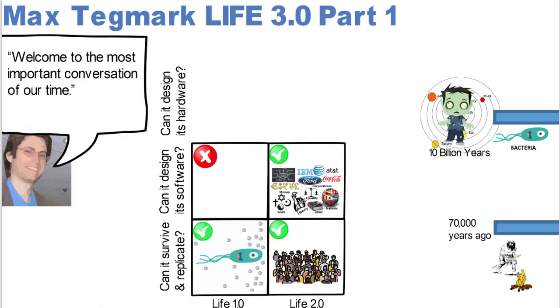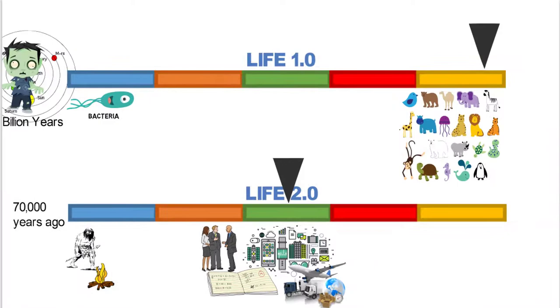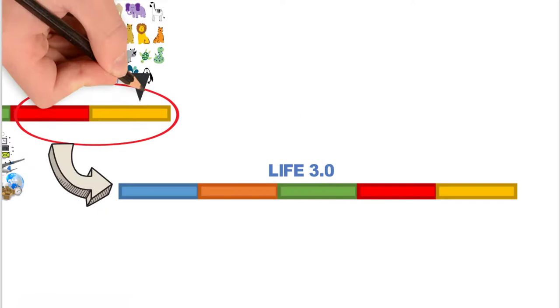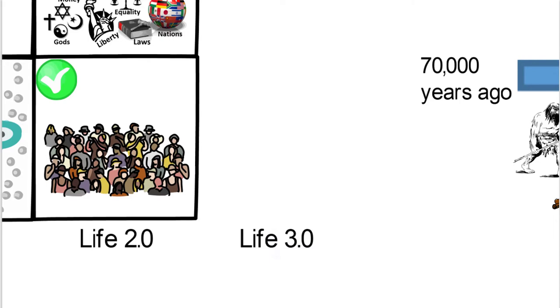All of these things basically created what we call our culture and what Harari calls our myths. And this is an example of some of our myths. But then the next question he looks at is, can it design its own hardware? And he says no, basically, for Life 1.0 and Life 2.0. But the whole book is really about this section of Life 2.0 from where we are today and moving through to look at what are some of the possibilities of Life 3.0.